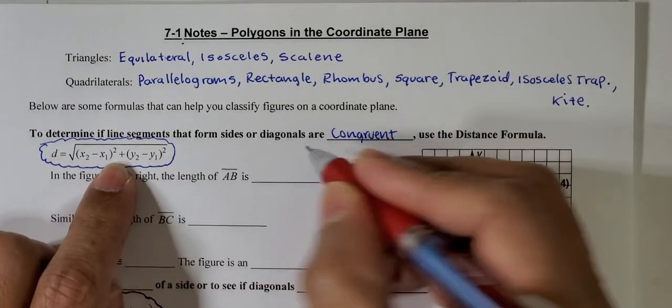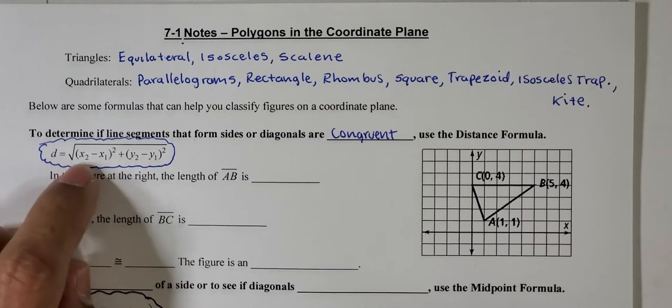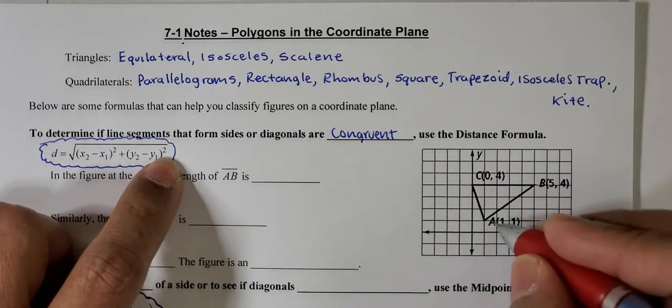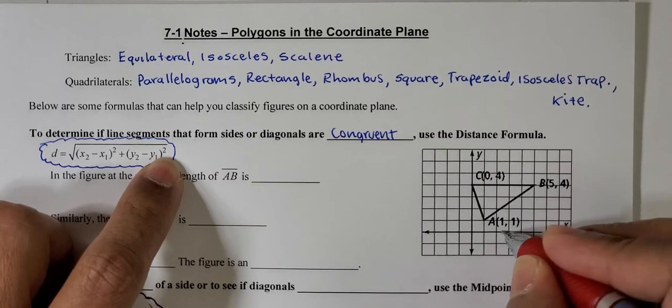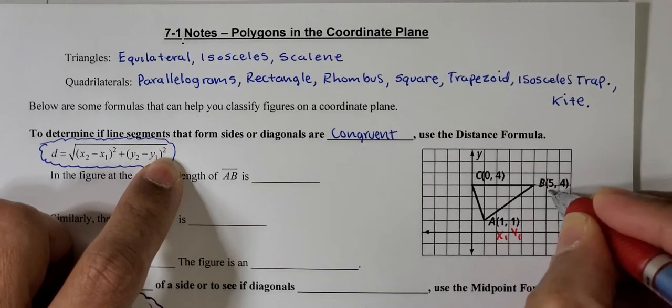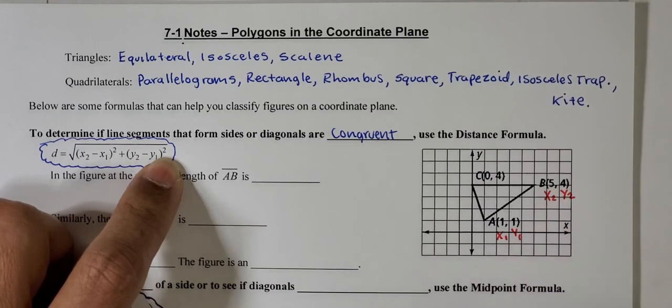Before I do anything, I'm going to label x1 and x2, y1 and y2. Since I'm trying to find AB, this is my x1 value, this is my y1 value, x2, and y2.